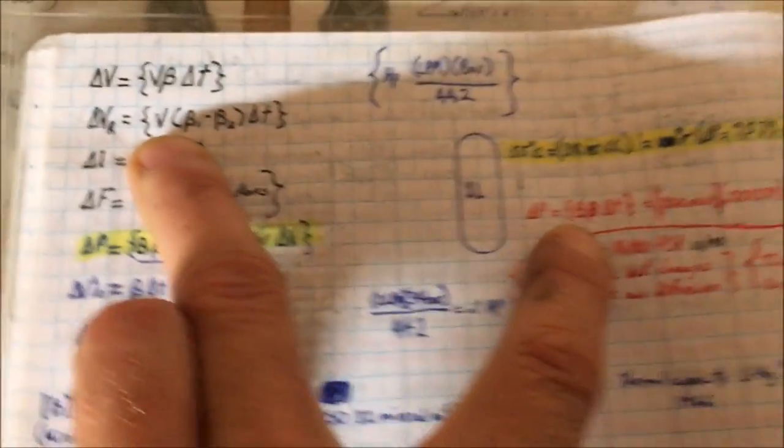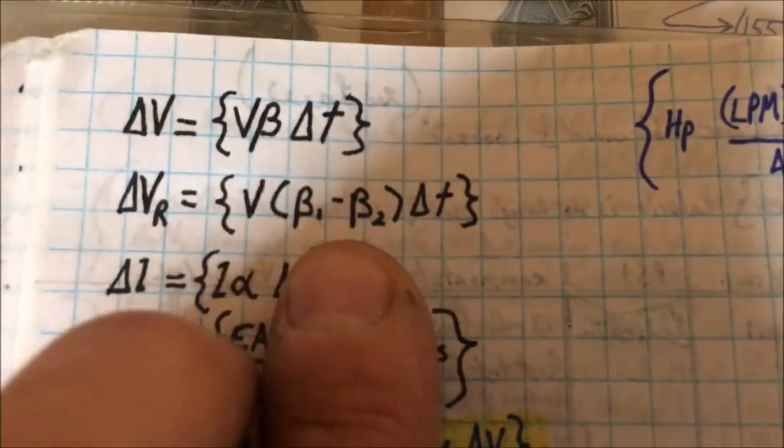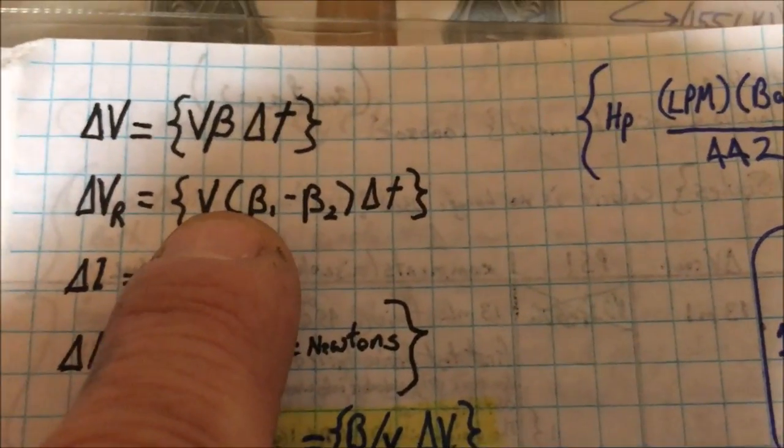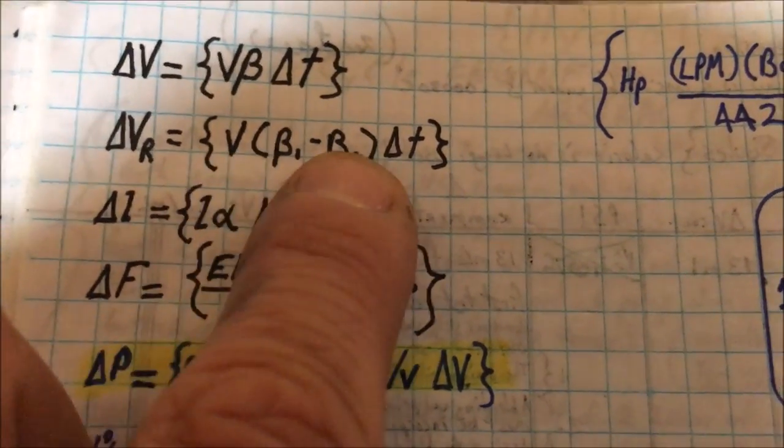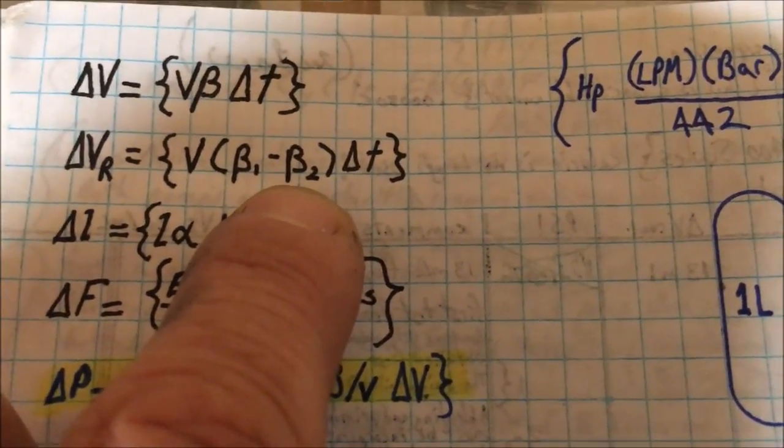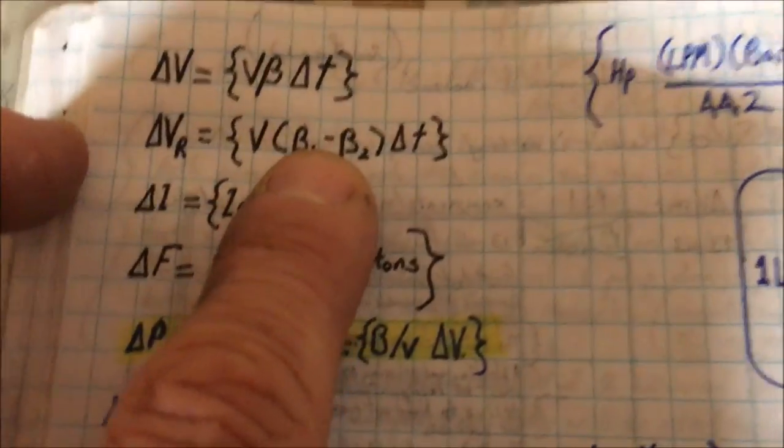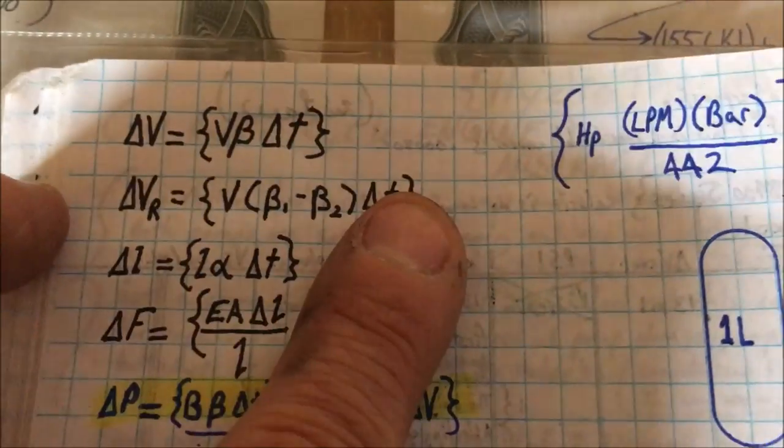You have to take in the apparent coefficient of expansion. This is how they build thermometers with this equation. They determine the coefficient of thermal expansion of the oil, acetone, or alcohol and subtract it from the glass coefficient. That gives you the relative coefficient of thermal expansion.